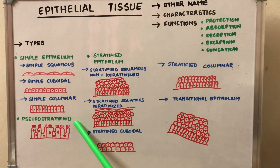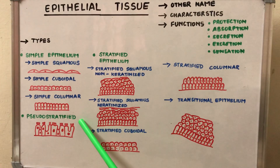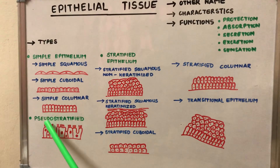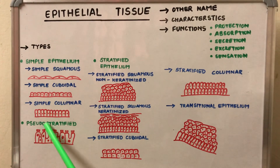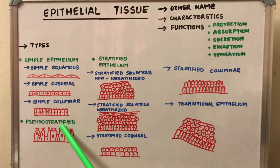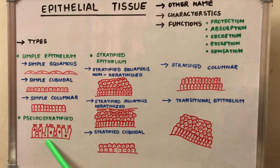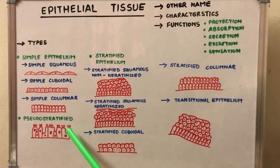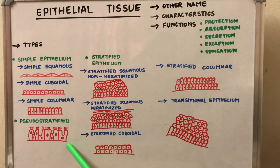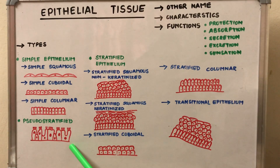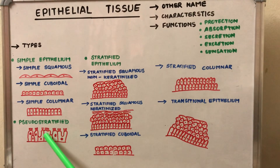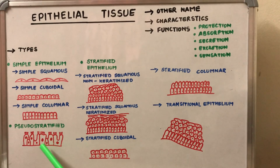The next type is the pseudo-stratified epithelium. The term is made up of two words: pseudo, meaning false, and stratified, meaning many-layered. The cells are of different heights and vary in nature. Though it is single-layered, it mostly contains tall columnar cells.